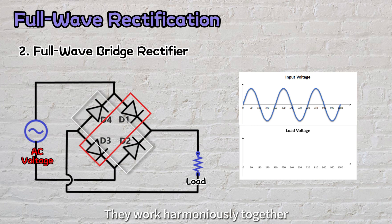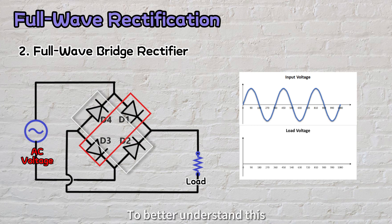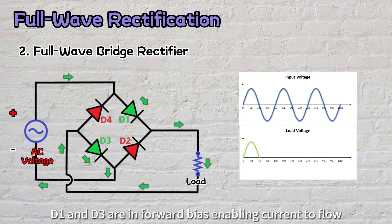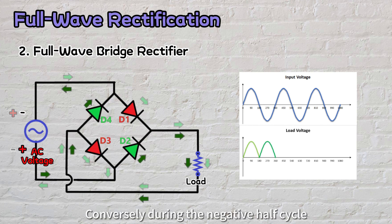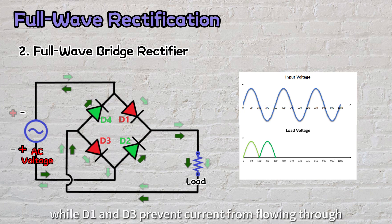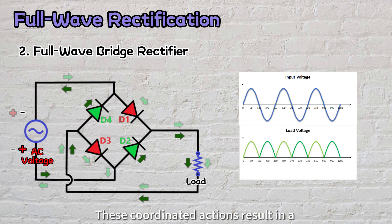They work harmoniously together. When one pair conducts, the other pair remains in a non-conducting state. To better understand this, let's look at the operation step by step. During the positive half-cycle, D1 and D3 are in forward bias, enabling current to flow, while D2 and D4 are in reverse bias, blocking the current. Conversely, during the negative half-cycle, D2 and D4 conduct the current, while D1 and D3 prevent current from flowing through. These coordinated actions result in a unidirectional, full-wave output at the load.